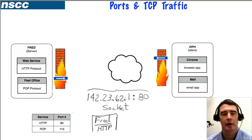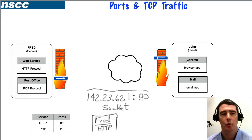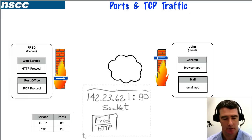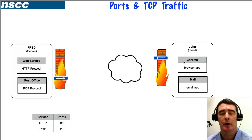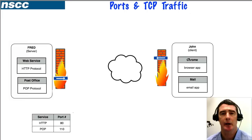The IP address identifies which computer we're sending to or from, and the port represents which application or service we're sending to and from. In our scenario, John has opened a Chrome browser and a mail application and wants to retrieve a web page from Fred the server.